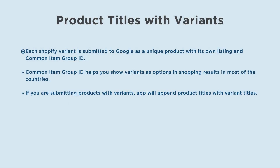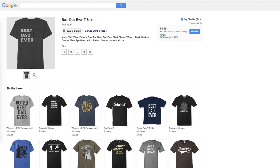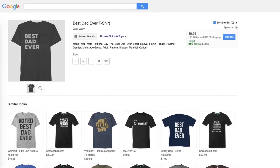Each Shopify variant is submitted to Google as a unique product with its own listing and a common item group ID. The common item group ID helps you show variants as options in the shopping results in most countries. If you are submitting products with variants, the app will append product titles with variant titles.